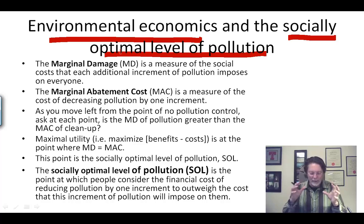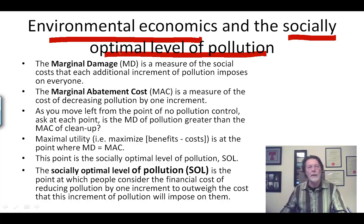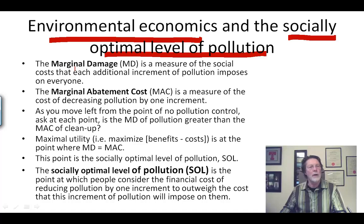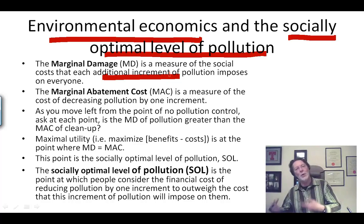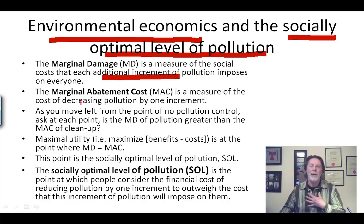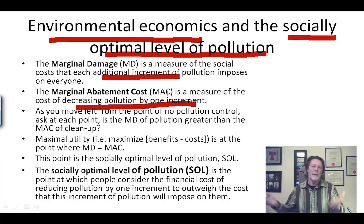The definitions: it's like regular economics, only the curves seem to go the opposite way. It starts with the notion of marginal damage, which is the measure of the social costs imposed on everyone by an additional increment of pollution. And the marginal abatement cost is the measure of the cost of decreasing pollution by an increment — say, tons of pollutants.